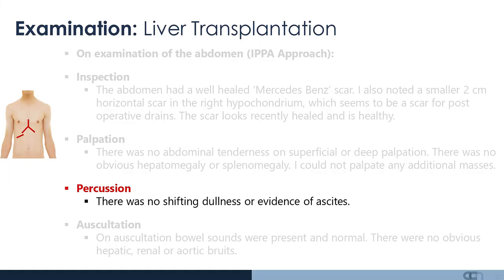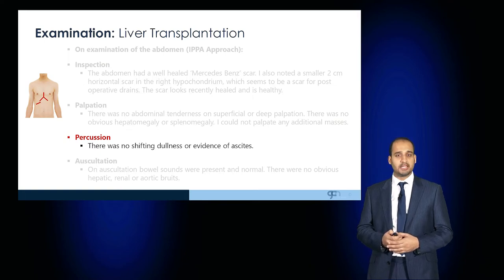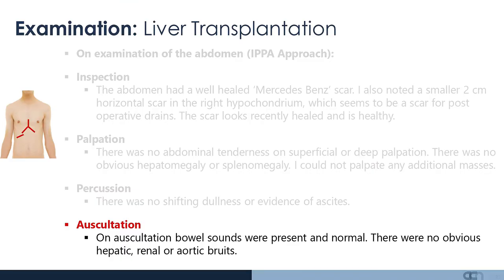On percussion, you would not expect the development of ascites from a functioning transplanted liver, and so you would not expect any evidence of shifting dullness. Auscultation should reveal normal bowel sounds with no obvious hepatic, renal, or aortic bruit.